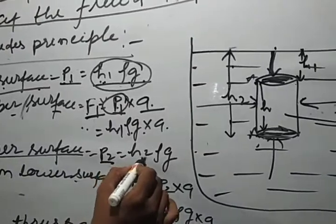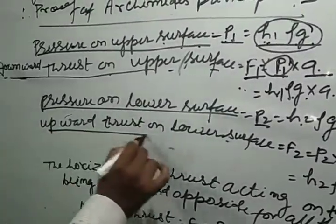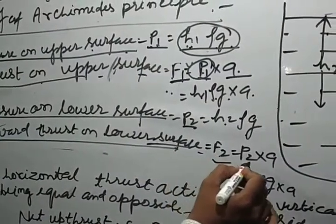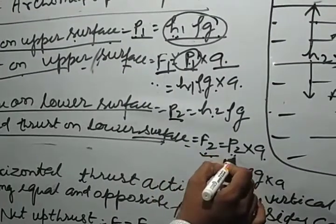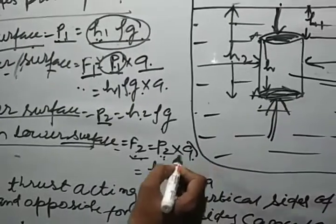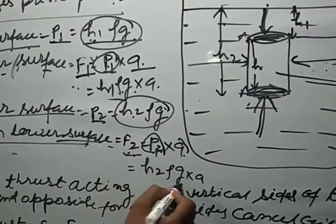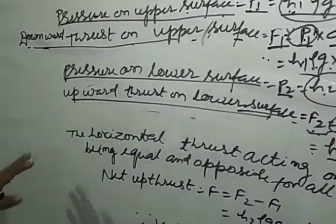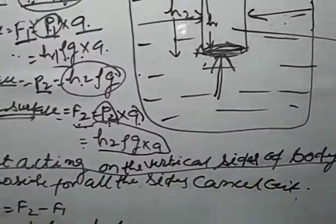The upward thrust on the lower surface is F2 = P2 × A = H2·ρ·g·A. The horizontal thrust acting on the vertical sides of the body is equal and opposite for all sides, so they cancel out.